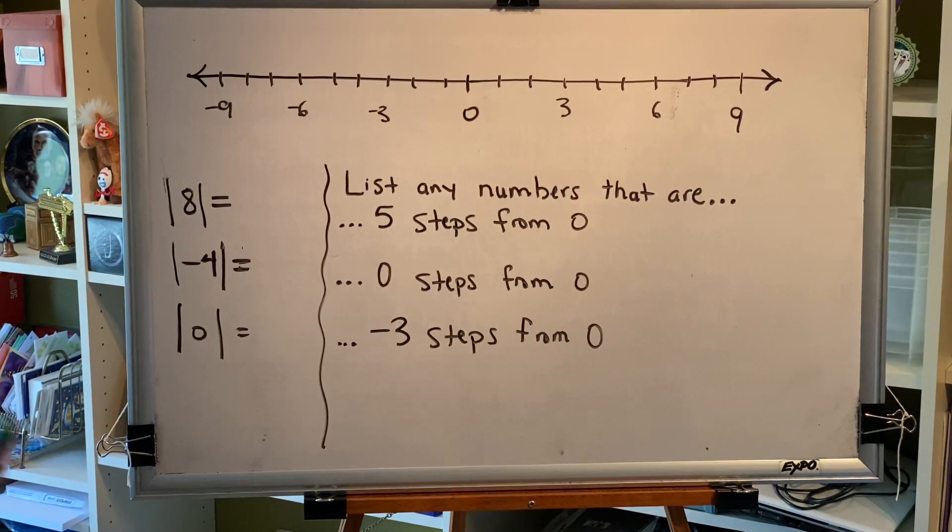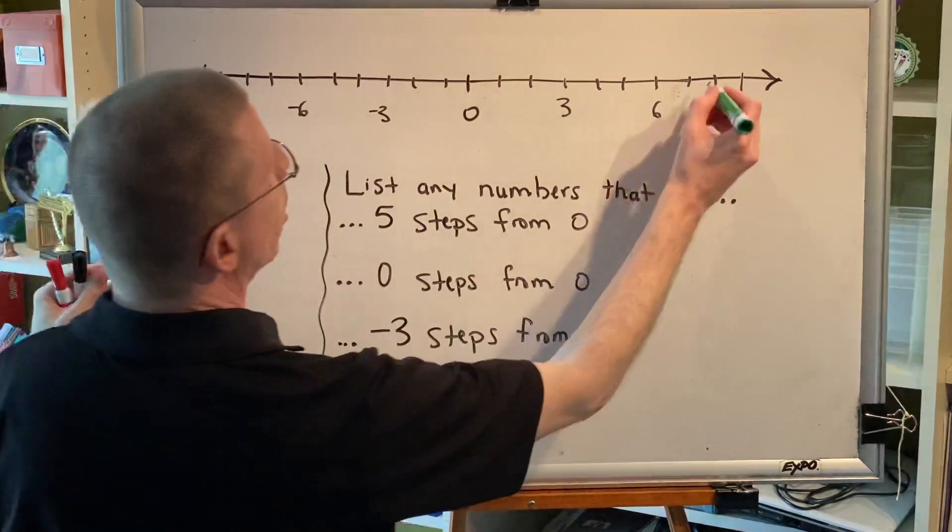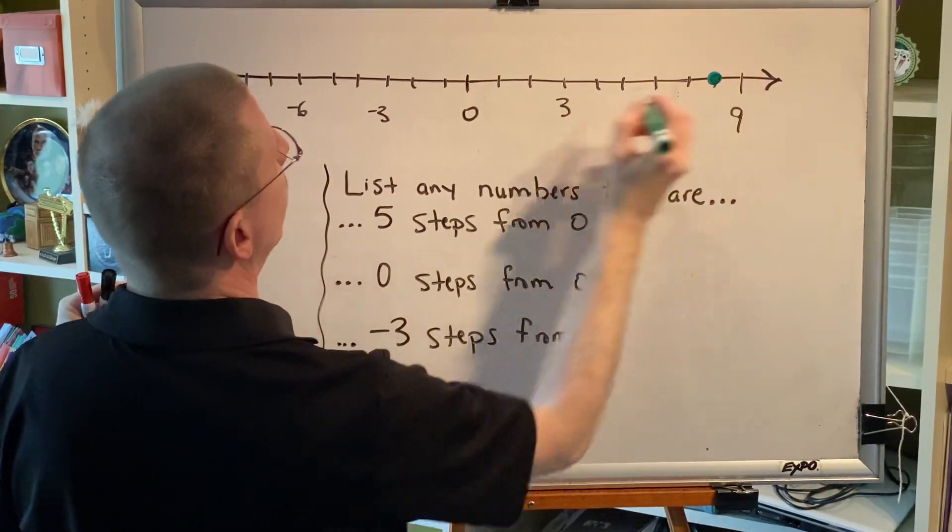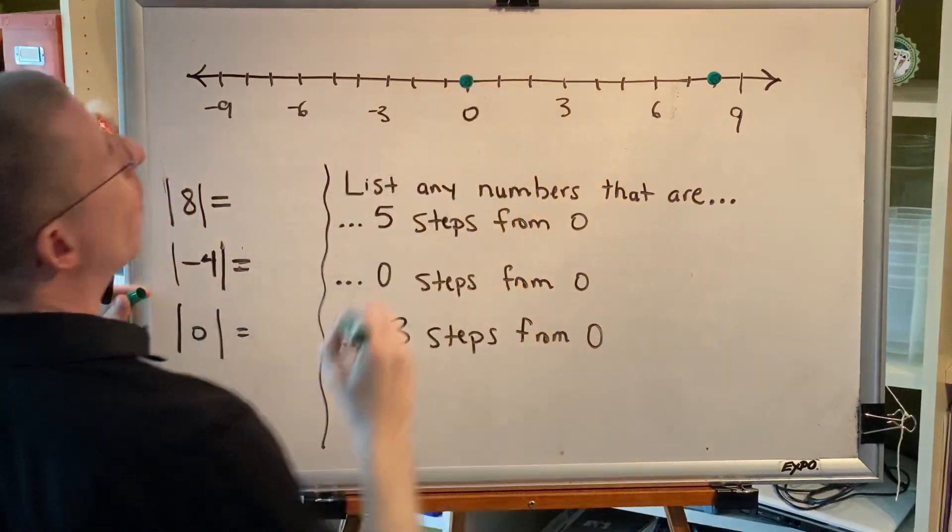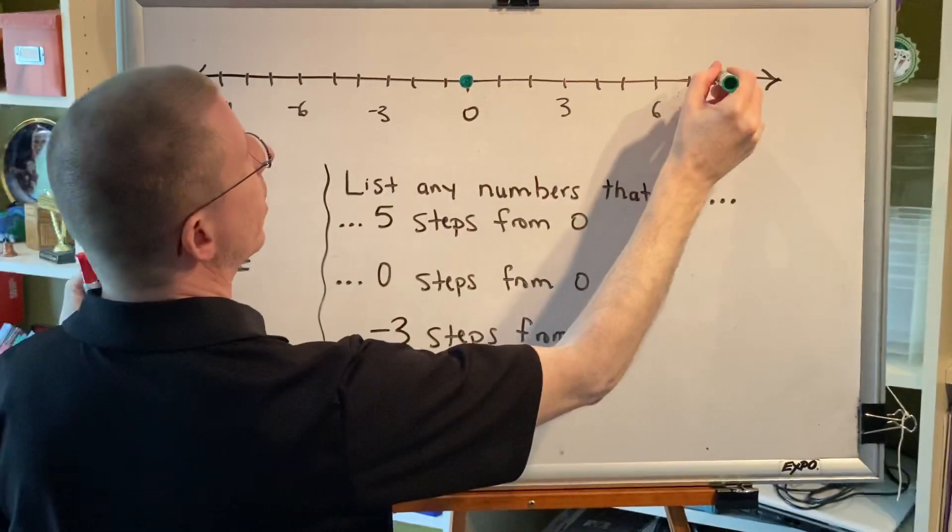Consider the following number line, which I've drawn here. What is the absolute value of eight? Well, absolute value is distance from zero. So, here's the number eight on the number line, and here is zero. How far apart are they? Let's count the steps.